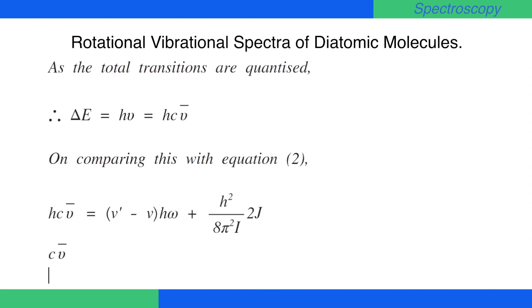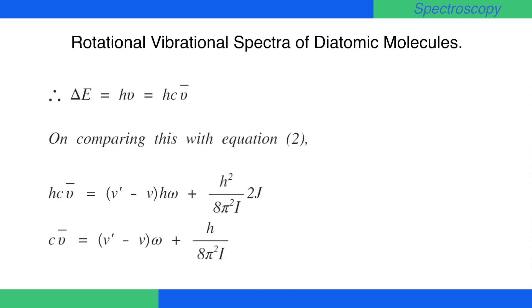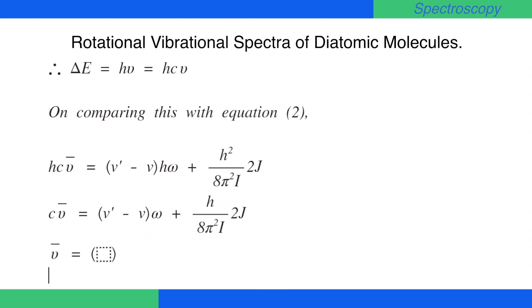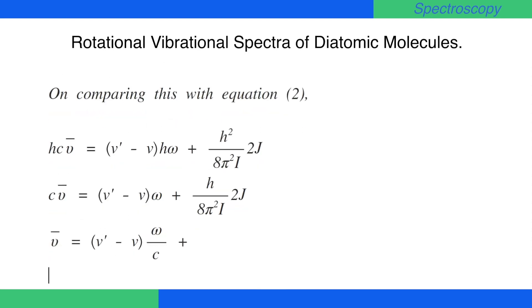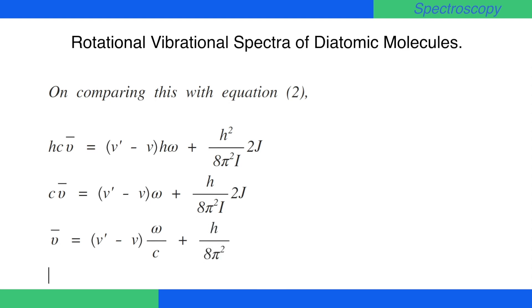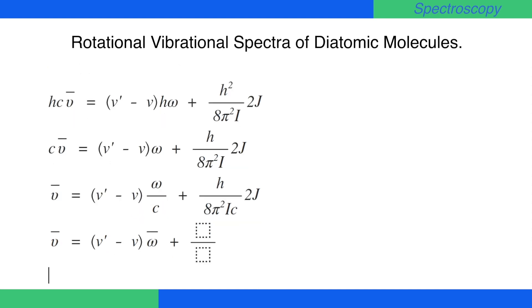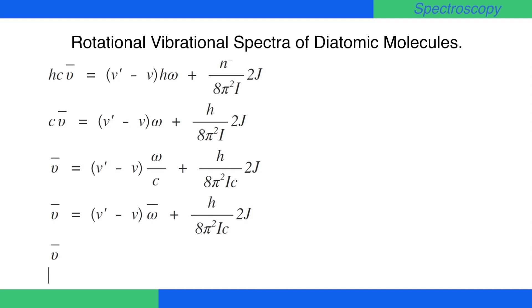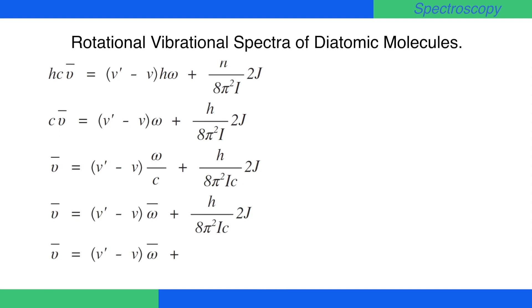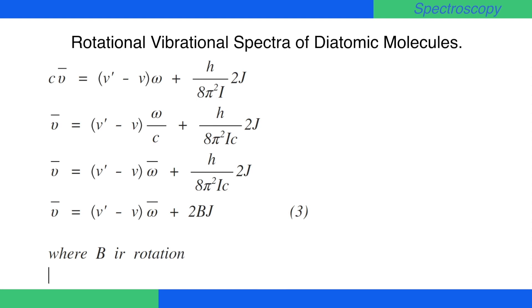Cancelling h from both sides, it becomes cν̄ = (v' − v) · ω + h / (8π²I) · 2j, which gives ν̄ = (v' − v) · ω/c + h / (8π²Ic) · 2j, which is ν̄ = (v' − v) · ω̄ + 2Bj. This is equation number 3, where B is the rotational constant given by h / (8π²Ic).